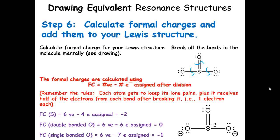Let's calculate the formal charges. You want to mentally break all the bonds in the molecule. Remember, we split the electrons evenly. In this structure, this oxygen ends up with six, this one with seven, this one with seven, and sulfur with four. We calculate formal charge for each atom by taking the number of valence electrons minus the number of electrons assigned after division.